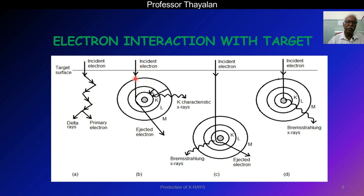In the second step, the electron interacts with the K-shell electron and removes it, creating a vacancy. To fill the vacancy, an electron from an outer shell transitions inward, and the difference in binding energy is given out as K-characteristic X-rays. If this takes place in the L-shell, it is called L-characteristic X-rays. In the third step, the electron enters the nuclear field and interacts with it, producing Bremsstrahlung X-rays. In the fourth step, the electron directly hits the nucleus and also produces Bremsstrahlung X-rays.